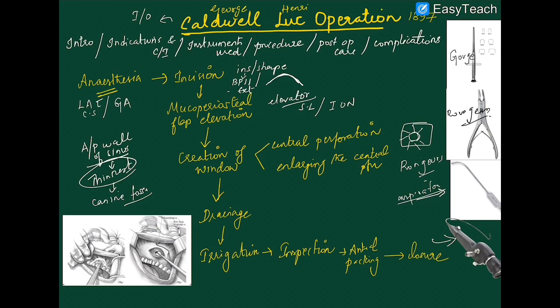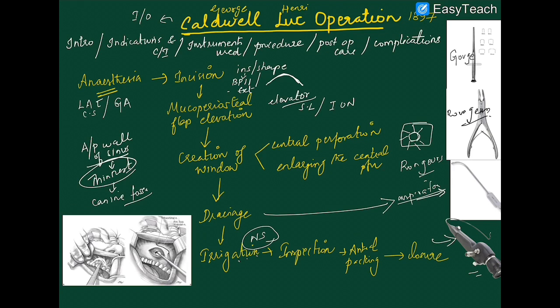The nasopharyngoscope illuminates the antral walls with a small light, allowing clear visualization of the antrum. This helps detect any foreign bodies left behind — such as cotton, gauze strips, or tooth roots impacted into the maxillary sinus. Everything can be visualized and removed. After removing all residual material, perform a final irrigation with normal saline, removing the irrigating solution with the aspirator.